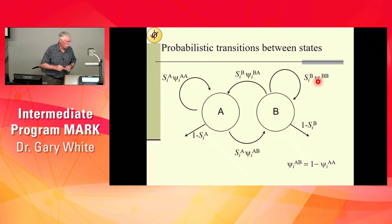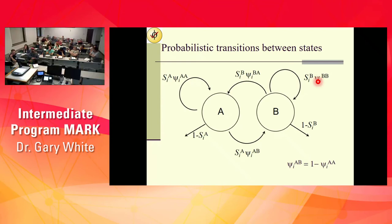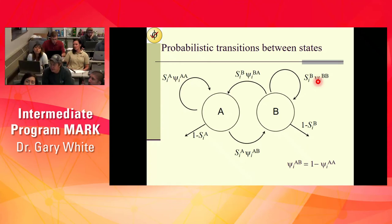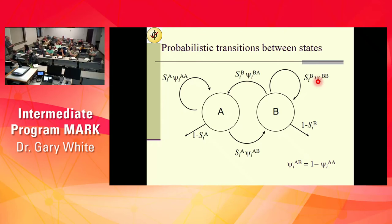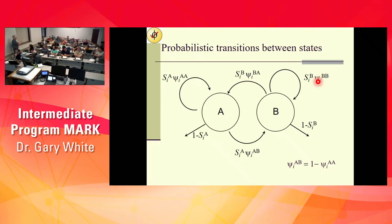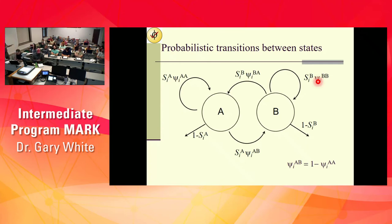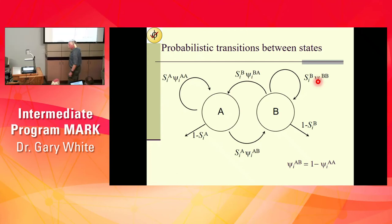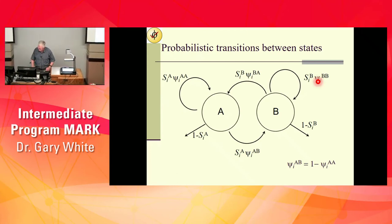For something like a Chinook salmon with mature and immature life states — where they die immediately after breeding — you could model that. You'd have a transition out of the breeding state into the next state, which would automatically have a survival rate of zero. We won't get into all the complex things you can do with the psi parameters just yet.